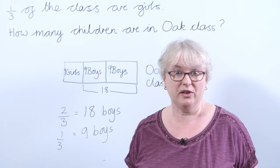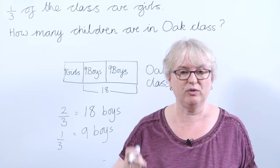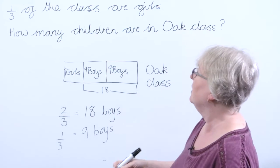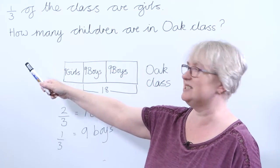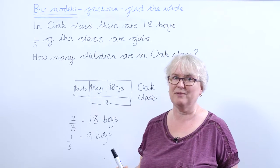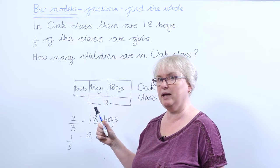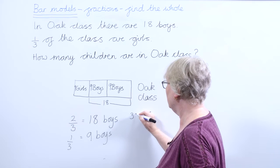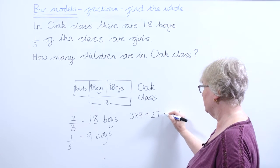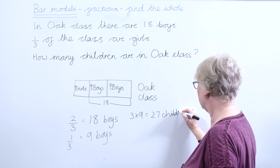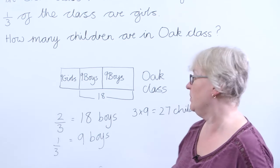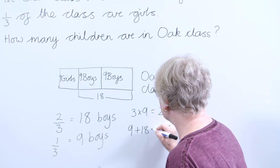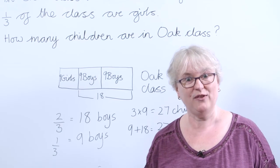A lot of children stop at this point thinking they're done, so it's important to go back and re-read the question. The question asks how many children are in Oak class altogether — and we haven't answered that yet. Looking at the bar model, some children will see three nines are 27, so the answer is 27 children. Another way is to go nine add 18, which also gives 27. Now we're sure we've answered the question.